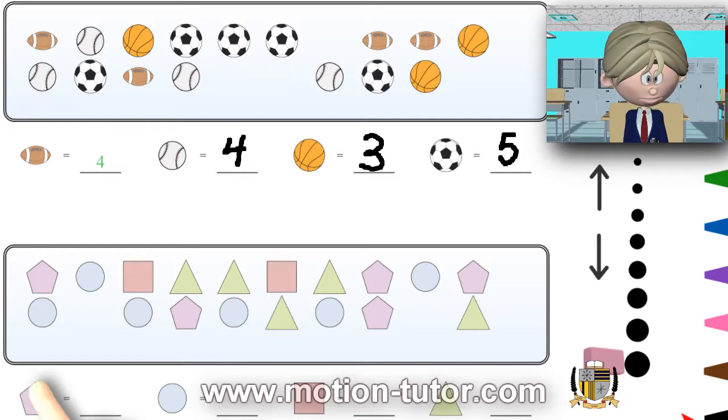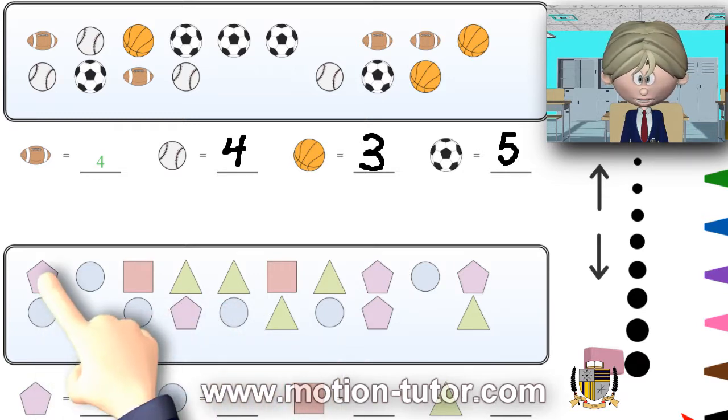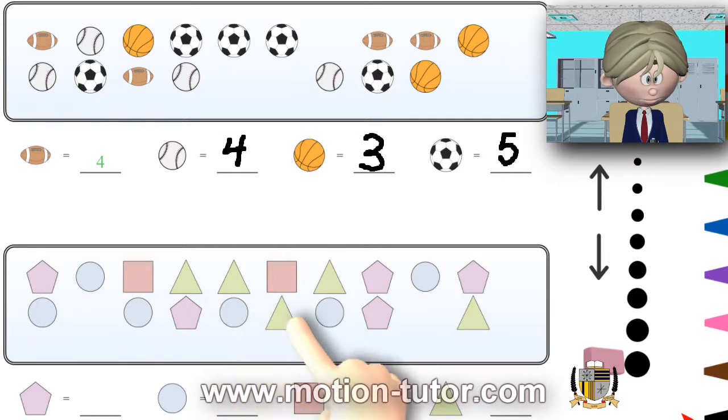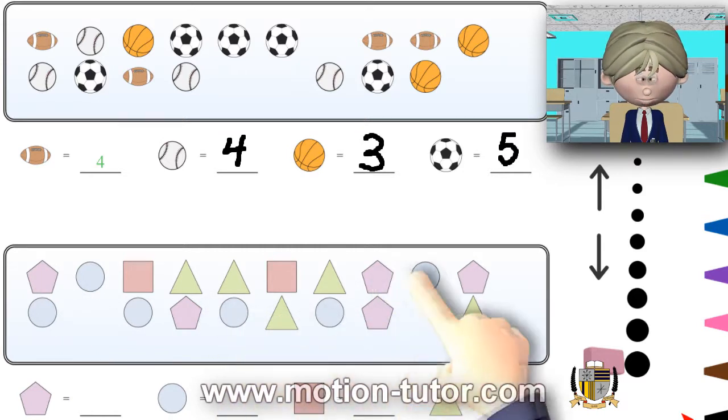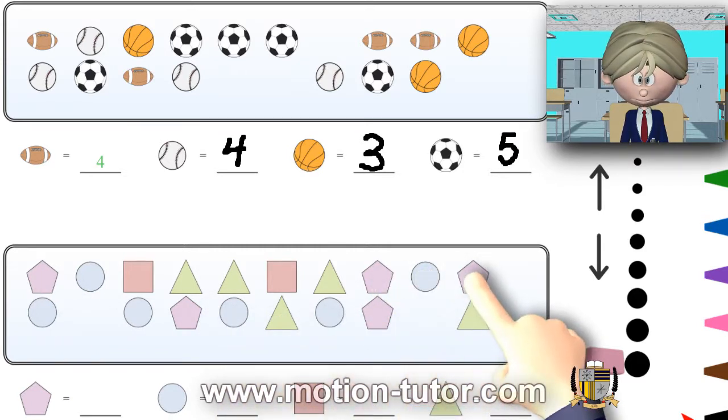This one's called a pentagon. How many pentagons do we see in this box? One, two, three, four, five pentagons.